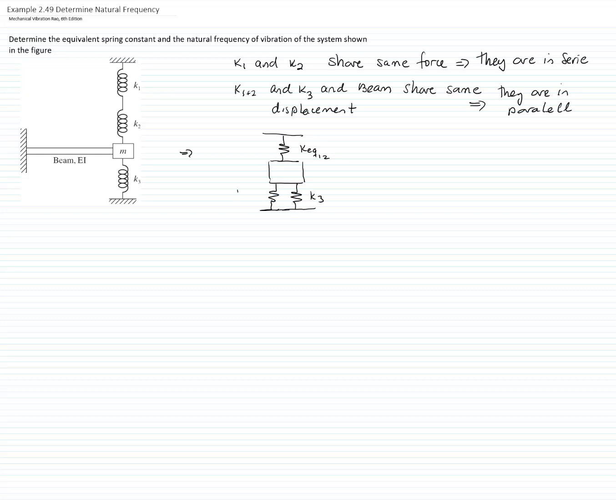Then these three springs can further be reduced to a single spring, and that's the equivalent constant of a spring that we would like to find.